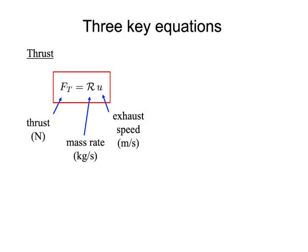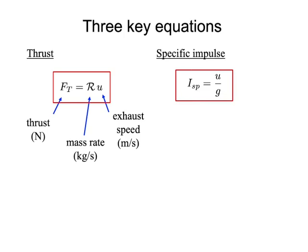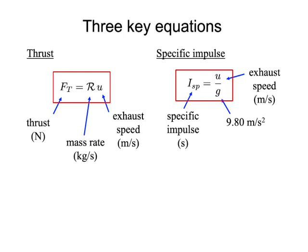The second equation is for specific impulse, a measure of the efficiency of a rocket motor. Specific impulse is defined as the exhaust speed in meters per second divided by g, the acceleration of gravity at Earth's surface, 9.8 meters per second squared. We use this value of g even when computing specific impulse in deep space or on the moon. The best chemical rocket motors used for space launch vehicles typically have specific impulses of a few hundred seconds.